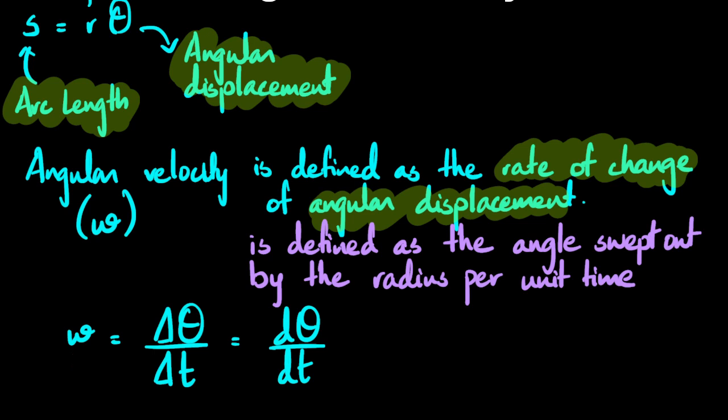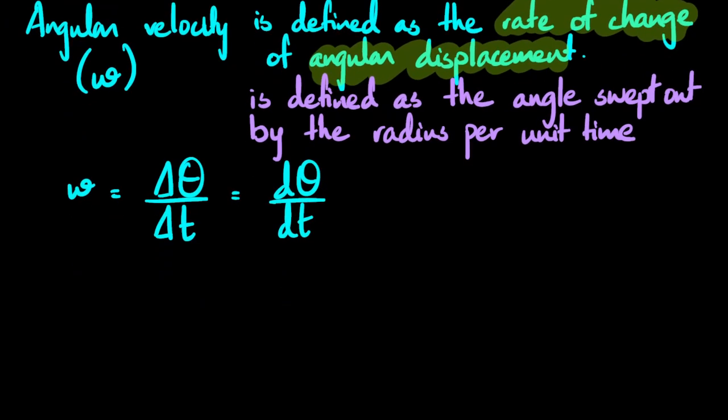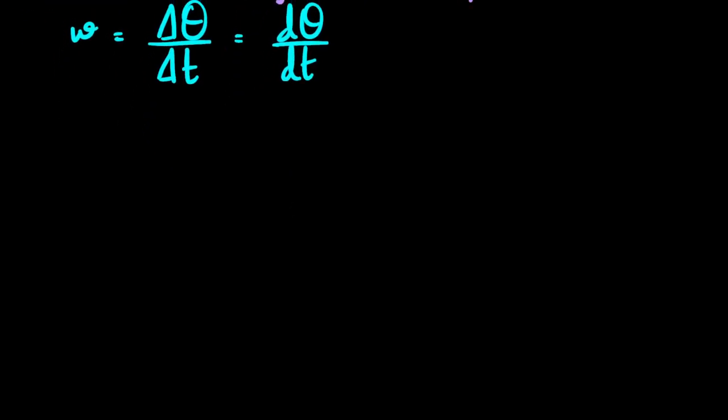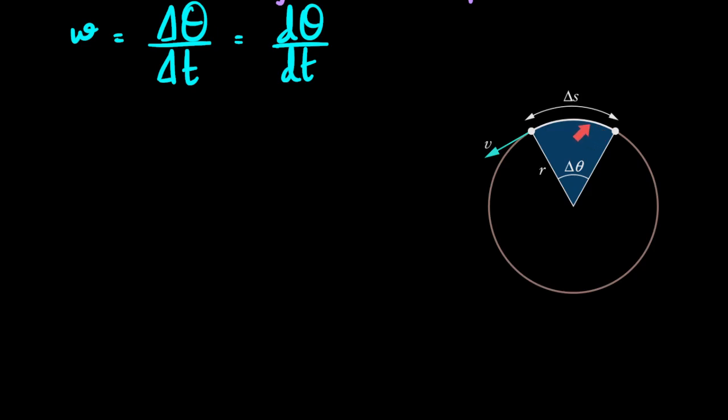Now we'll be putting together what we learned in the last lesson, which is s equals rθ, and this relationship that we just talked about, which is omega is the rate of change of angular displacement. Here we have an object which is traveling at a constant speed v in a circle of radius r, and obviously while traveling it's tracing out some angle and also producing a sector with some arc length.